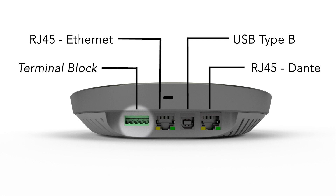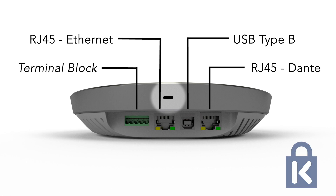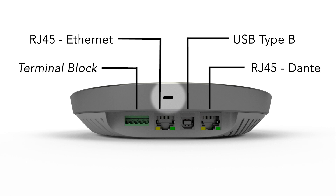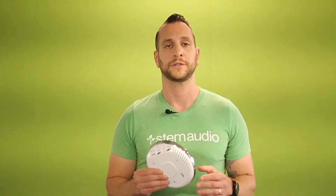Then finally, if you go back to the center, right above the Ethernet, you'll see a little Kensington lock logo over there, and that is because we do have a Kensington lock capability on the hub, in case you mount the hub somewhere and you want to make sure that it's locked in place and nobody walks away with it.